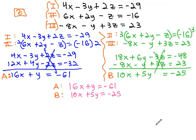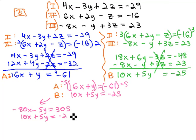And it's probably going to be easiest to eliminate the y in this case, by multiplying the first equation by negative 5. We'll move over. The first equation is now negative 80x minus 5y equals 305. The second equation, 10x plus 5y equals negative 25.